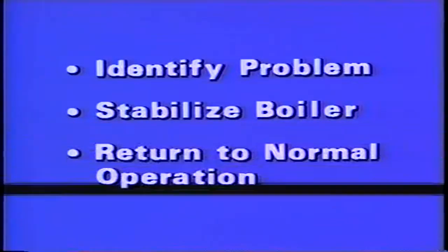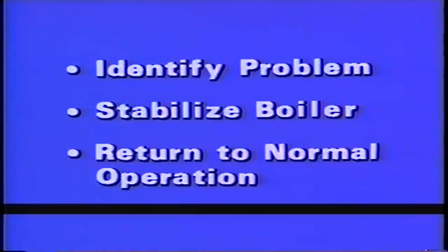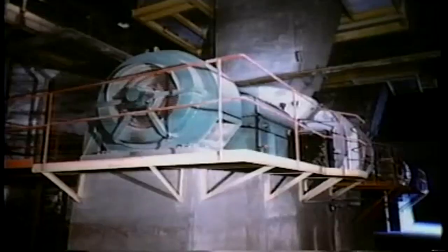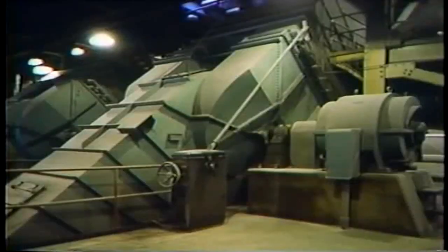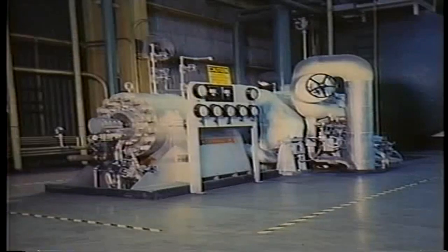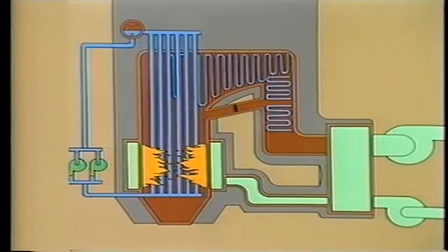If this happens, the operator must identify the problem, take appropriate action to stabilize the boiler, and return the boiler to normal operation as quickly as prevailing conditions allow. In this part of the program, we're going to look at how an operator deals with the loss of boiler auxiliaries. The equipment that we'll cover includes induced draft and forced draft fans, air preheaters, boiler water circulating pumps, and boiler feed pumps.